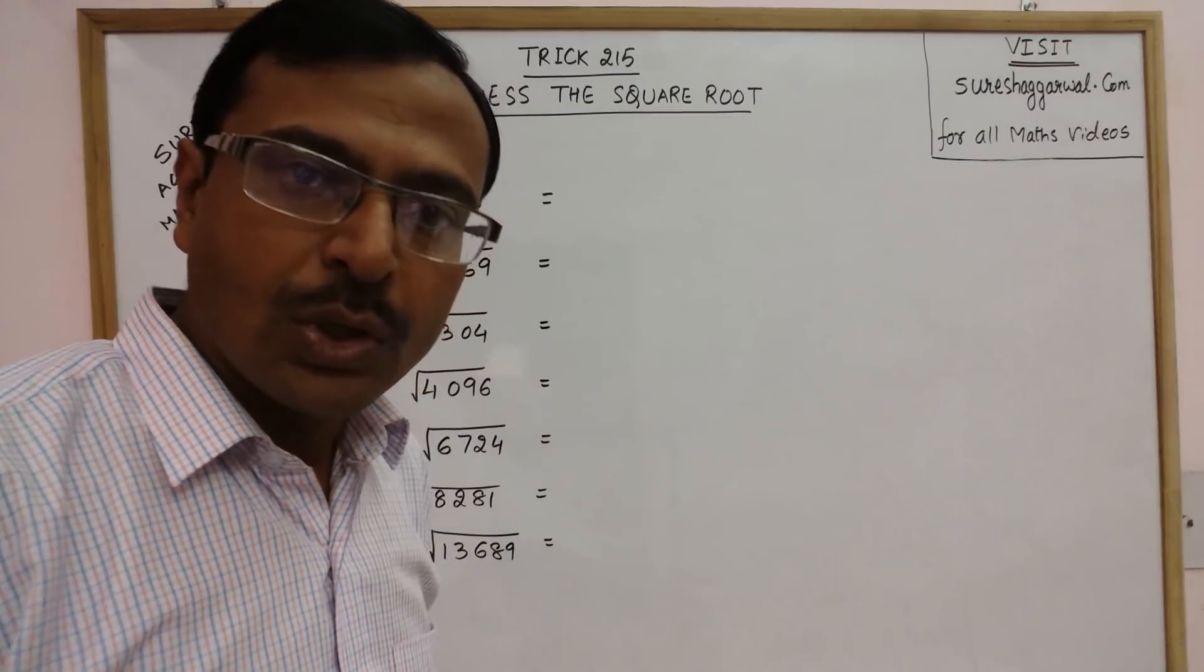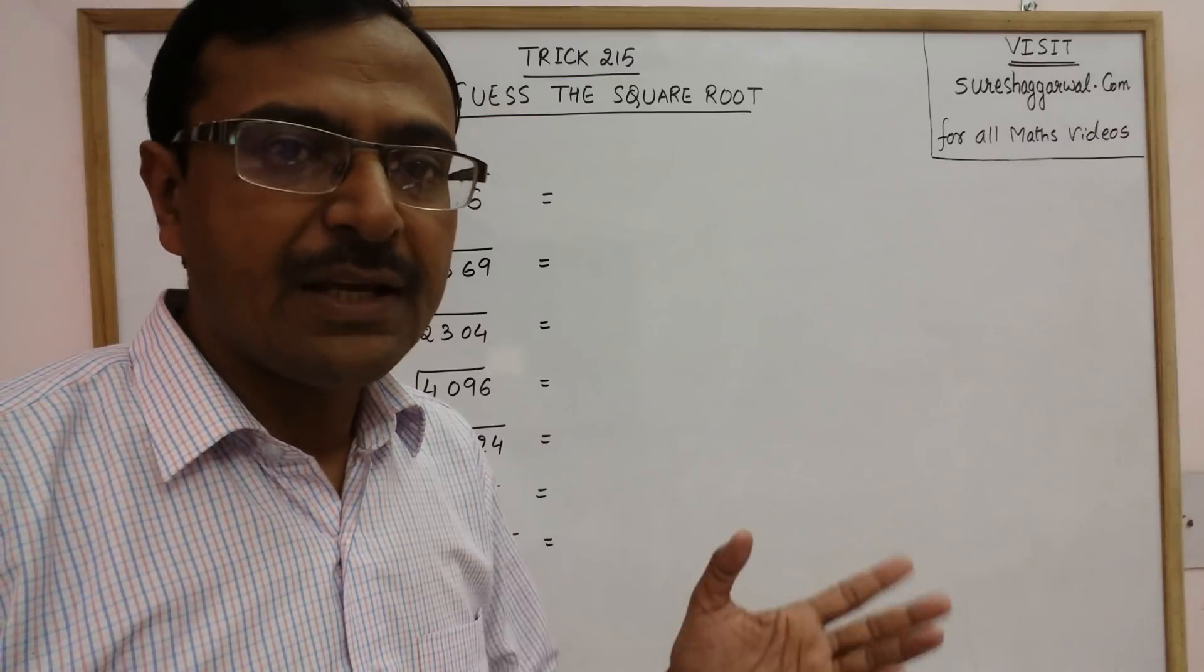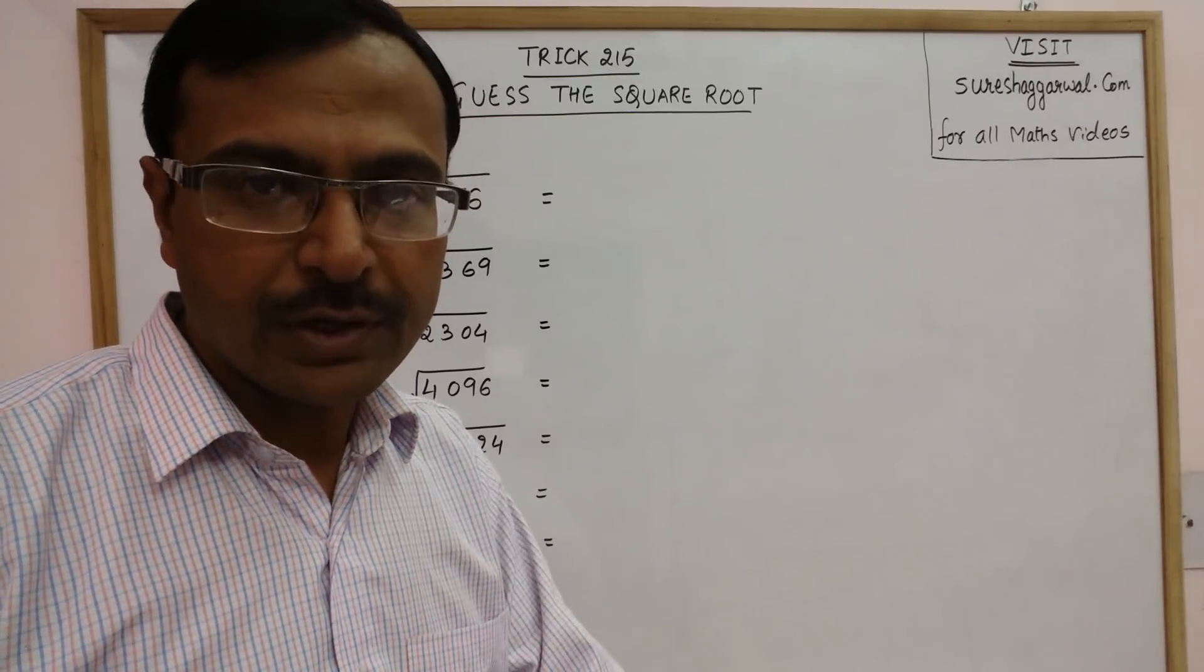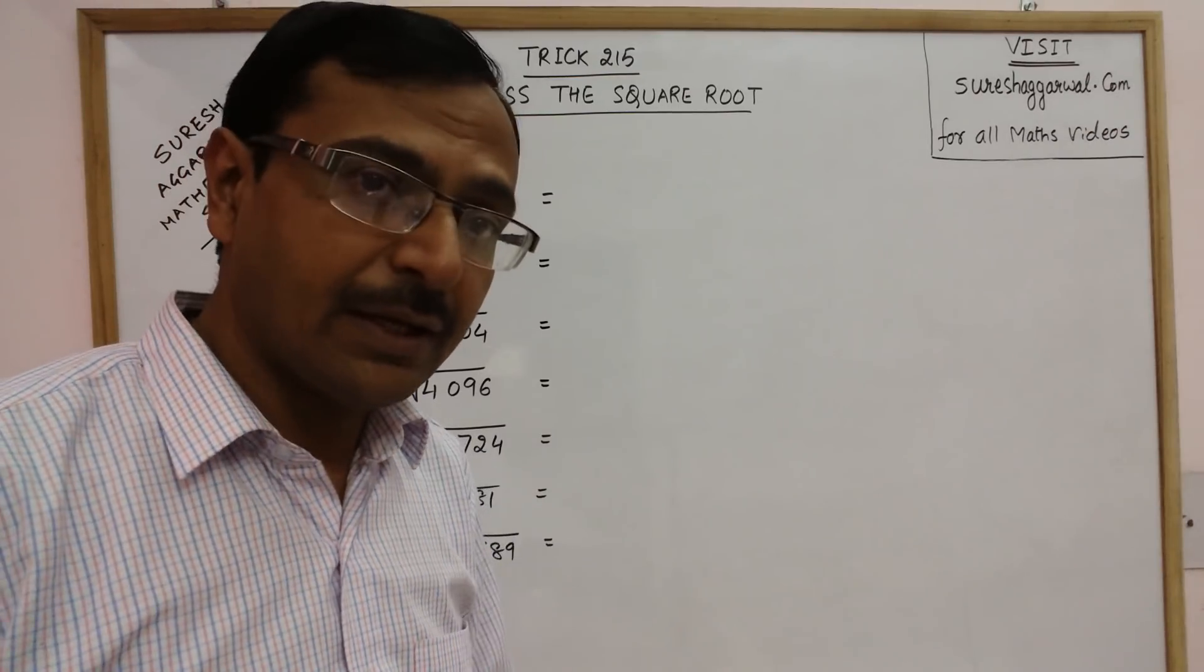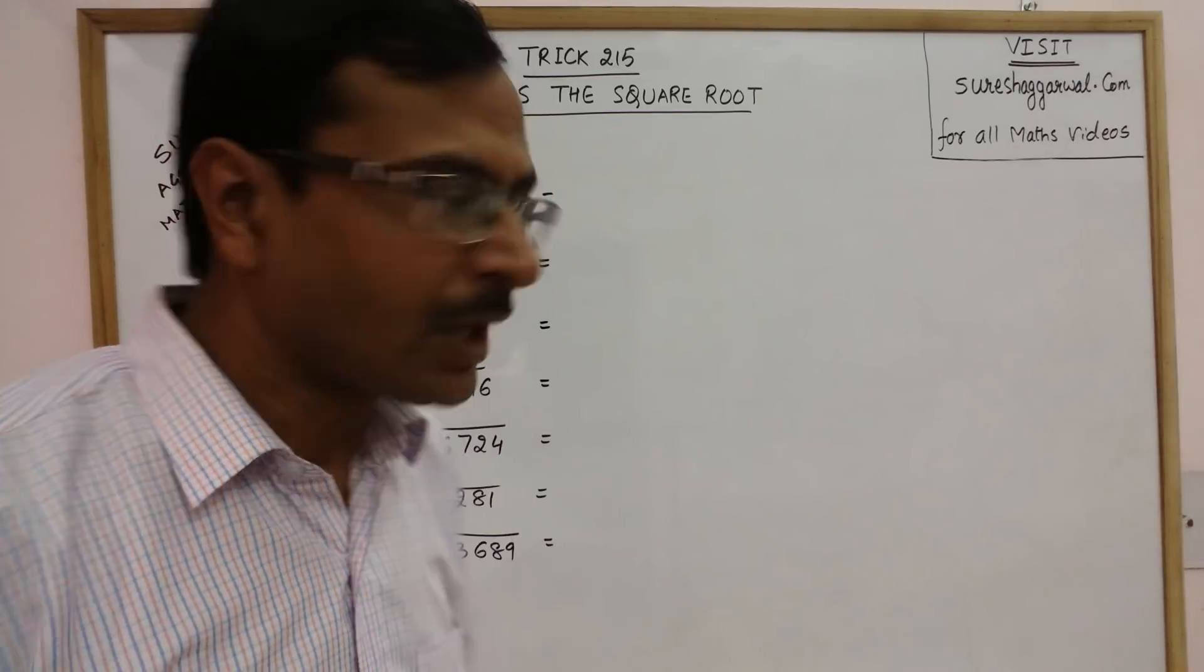Now, what you need to know is the square of round figure numbers like 20 square is 400, then 30 square is 900, 80 square is 6400 and so on.